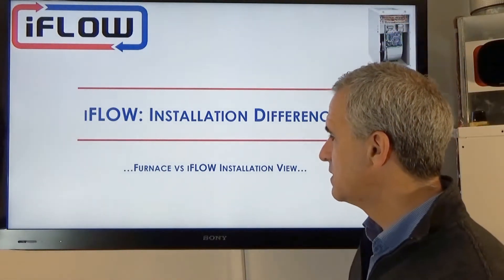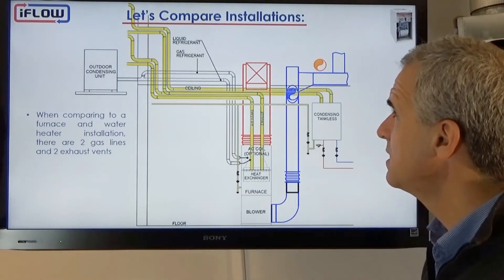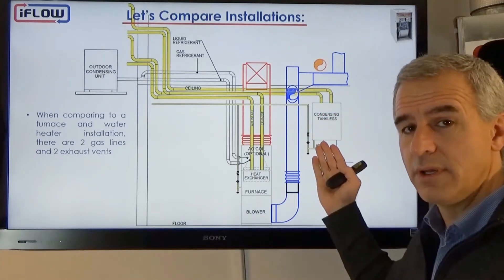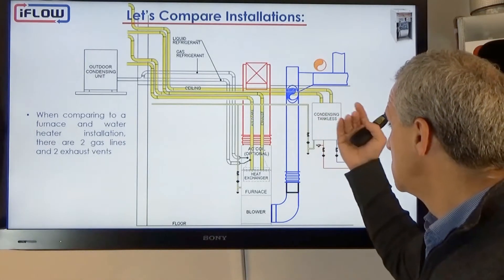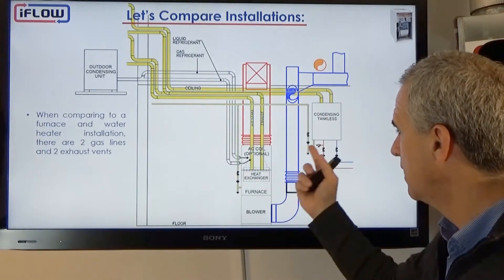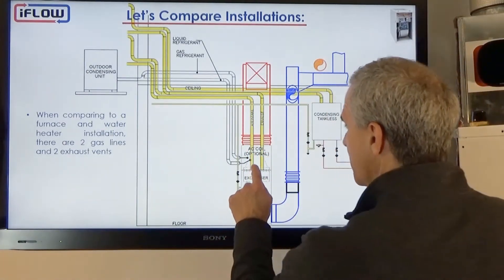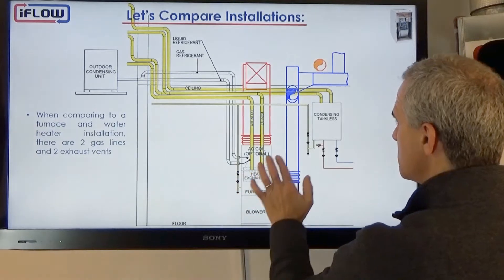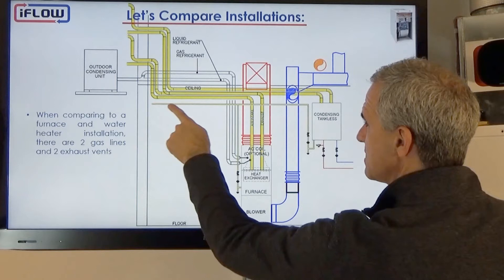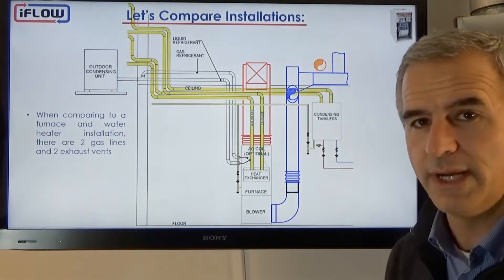Now let's look at the differences between a furnace and an air handler. This is an installation that has a tankless water heater — though it could be a tank type as well. We have a water heater on one side and a furnace on the other — two gas appliances. So we have two exhausts: an exhaust and intake on the furnace, and an exhaust and intake on the water heater, plus a gas line coming in feeding both appliances.